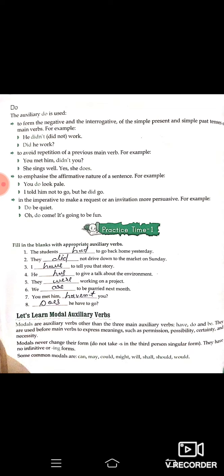Practice time — fill in the appropriate auxiliary verbs. Now let's learn modal auxiliary verbs. Other than the three main auxiliary verbs — Be, Have, and Do — the remaining auxiliary verbs are called modals. They are used before main verbs to express meanings such as permission, possibility, certainty, and necessity.